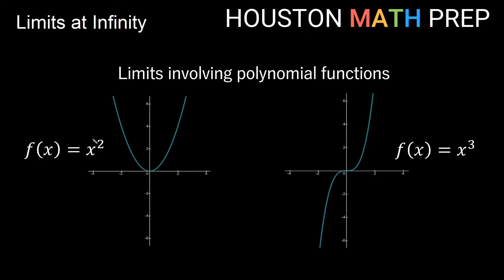Looking at some examples: y equals x squared has right end behavior going positive and left end behavior going positive as well. A different thing happens on y equals x cubed — right end behavior goes infinitely positive, and left end behavior goes infinitely negative. Note that x squared is 1x squared and x cubed is 1x cubed. When we have a positive coefficient in front of our highest power term, that tells us the right side end behavior is going to be positive.